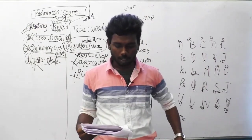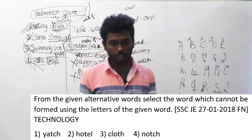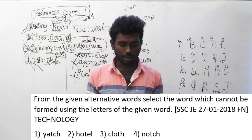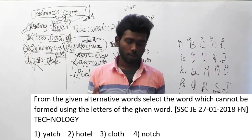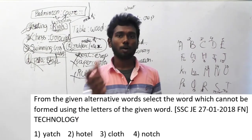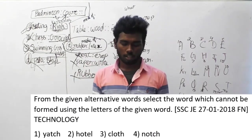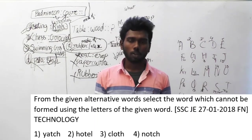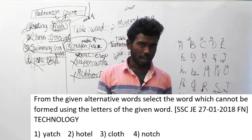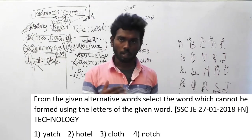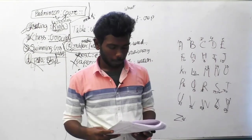Question number 143. From the given alternative words, select the word which cannot be formed using the letters of the given word. This question is asked in SSC JE, 27th January 2018, forenoon session. The word is technology. Options are: yachts, hotel, cloth, and notch. In option A, the word yachts contains the alphabet A. Technology does not have the letter A. So yachts cannot be formed using the letters of technology. The answer is option A, yachts.